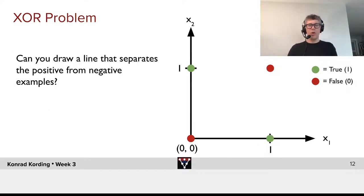Okay, so what does that mean? Can you draw a line that separates the positive from the negative examples? You can draw a line, but it wouldn't be a straight line. And it's very clear why this is the case.